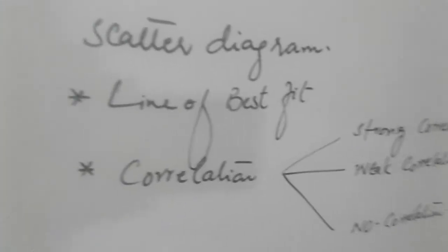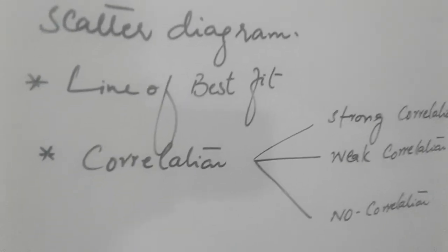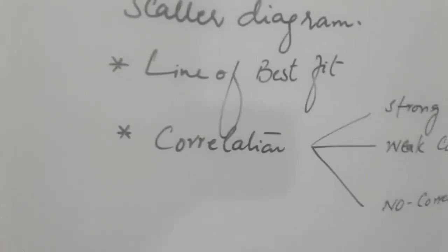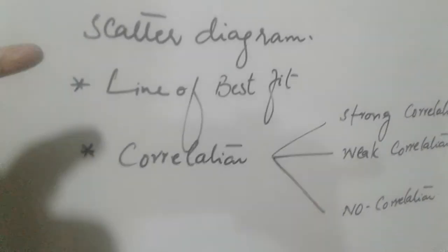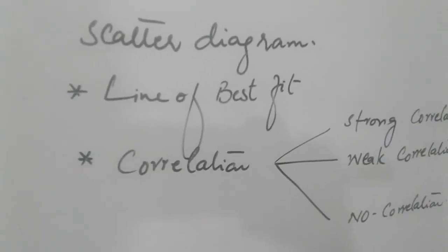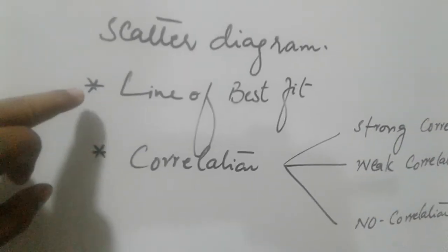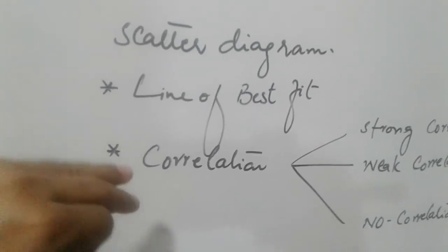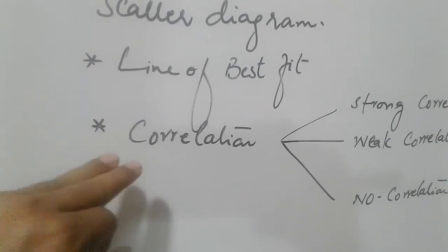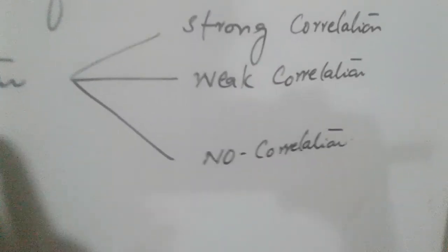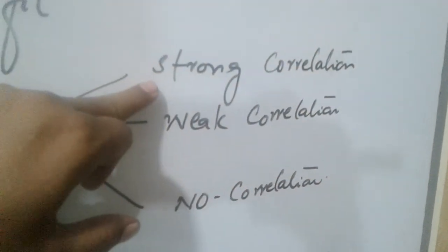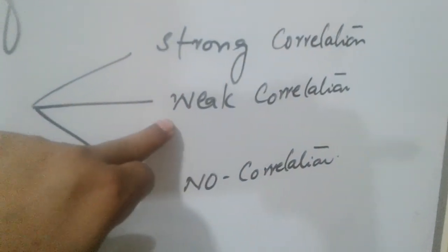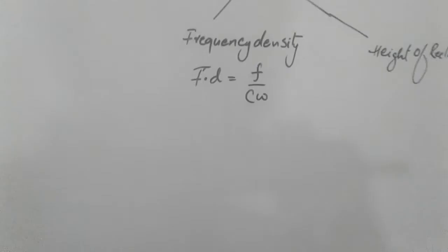Quartiles which is scatter diagram. Last two years we will find correlation. Correlation—what is it? If it is strong correlation or no correlation. Then we will discuss the last diagram.